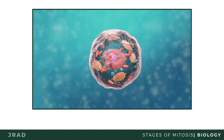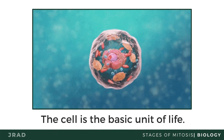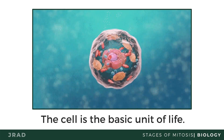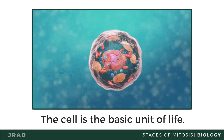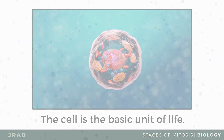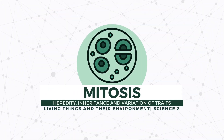The cell is the basic form of life that can perform self-sustaining processes such as obtaining nutrition from food, absorbing essential nutrients, excreting waste materials, responding to the environment, and reproduction. Multicellular organisms like humans grow as we produce more cells through cell division like mitosis.